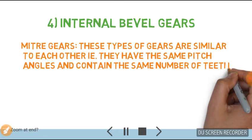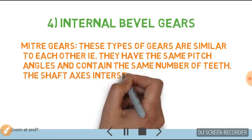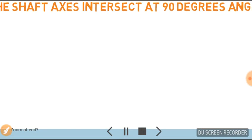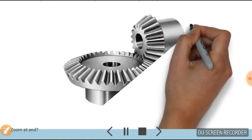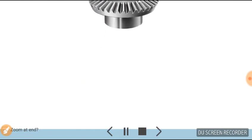The shaft axes intersect at 90 degrees angle. This is the basic diagram of it.